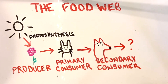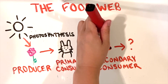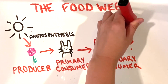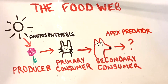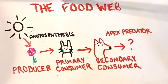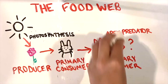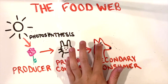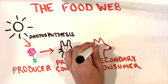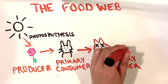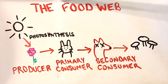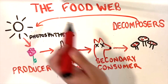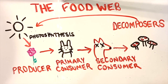Then what happens after the fox? No bigger animals come to eat the fox, which makes the fox an apex predator. But that doesn't mean the fox doesn't contribute to the food web at all. When the fox passes away, it is broken down by decomposers — bacteria and fungi that break down dead plants and animals back into nutrients in the soil.